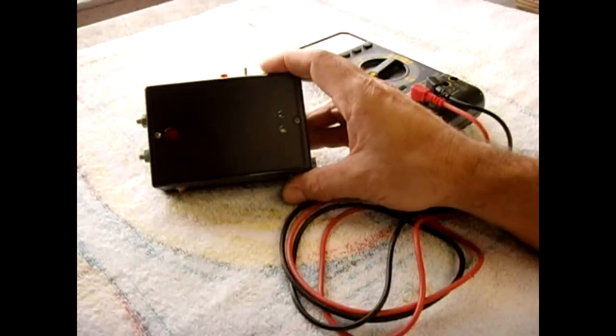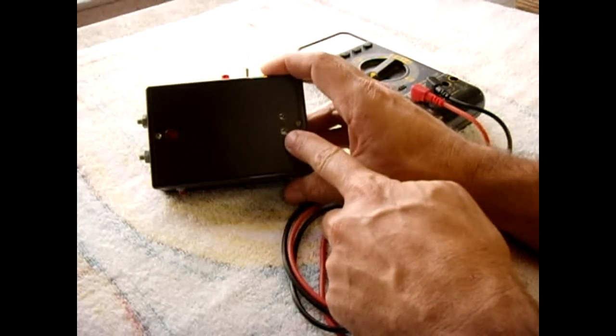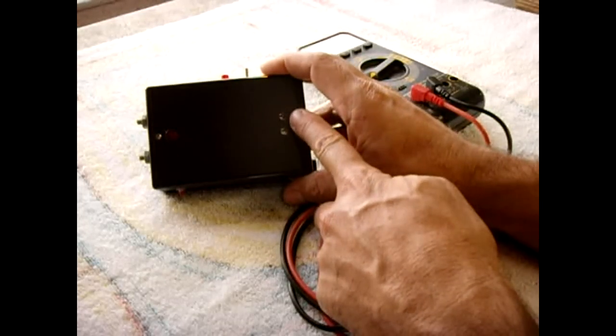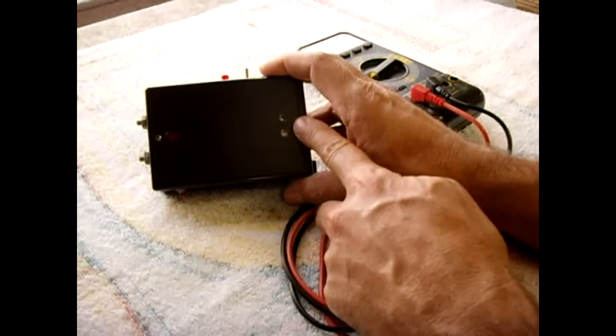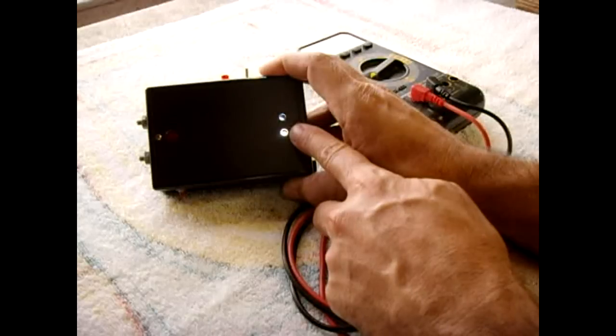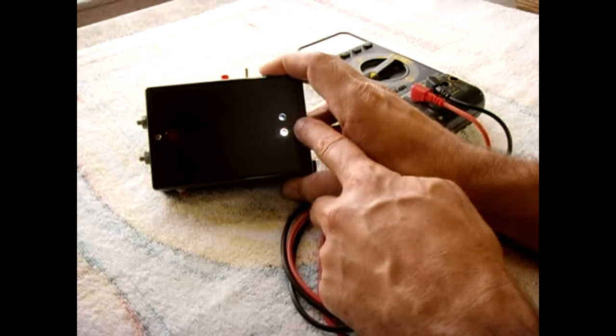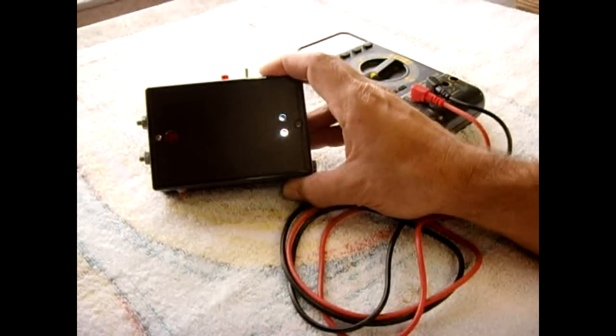I also have a battery indicator. This one here is a reference and this one here indicates the battery charge when you press the button. When this one gets dim, that indicates the battery is getting weak. When the LED goes completely off, that indicates the battery is three volts or lower and it's time to charge.